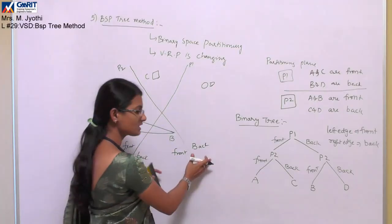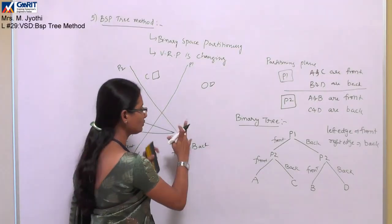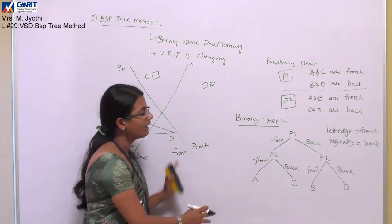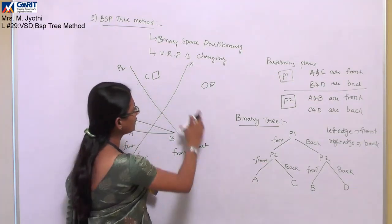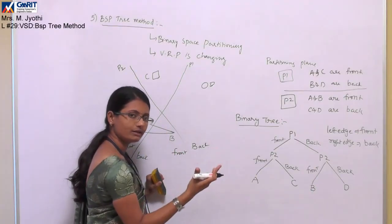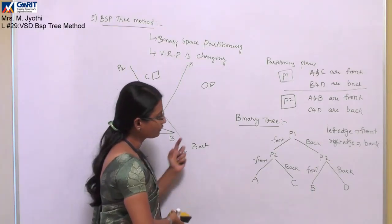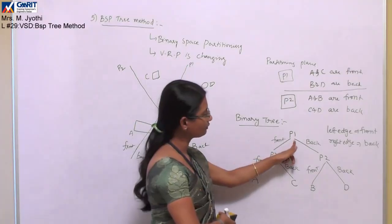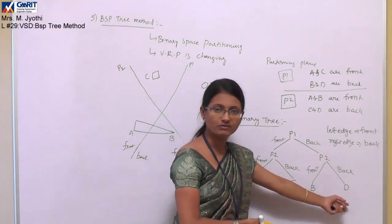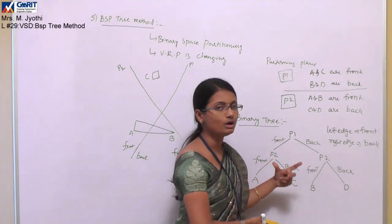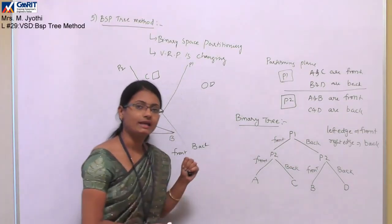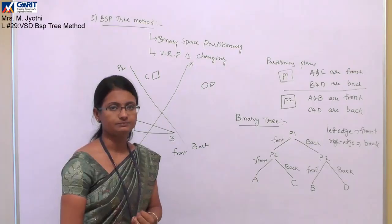In summary: whenever objects are given, we partition the space using partitioning planes — you can use two or even three planes. After partitioning, draw the tree, and depending on the leaf nodes, process the binary tree accordingly. This is completely about the binary space partitioning tree.